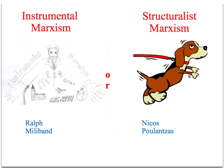For the exam, in order to get a good mark it's important to identify and explain at least two different types of Marxisms. On one hand we have a perspective called instrumental Marxism, associated with the work of Ralph Miliband. On the other hand we have structuralist Marxism, associated with the work of Nikos Poulantzas.